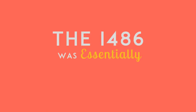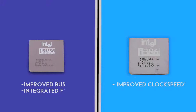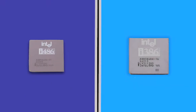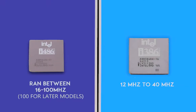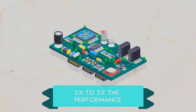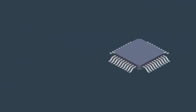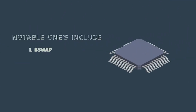The i486 was essentially a high-performance follow-up to the i386. It focused on improving the total performance of the processor rather than its clock speed. As a result, its lowest clock speed was 16MHz, just 4MHz higher than the i386, all the while achieving Intel's goal of 2-3 times the performance of the i386.